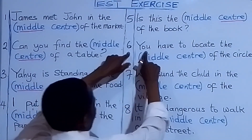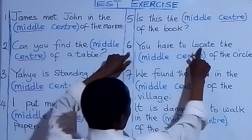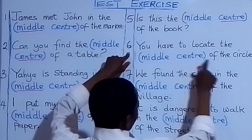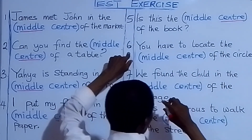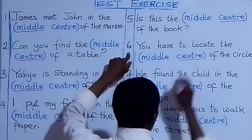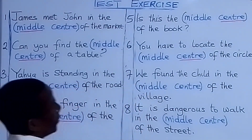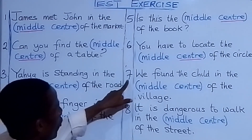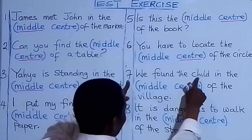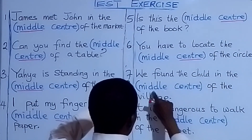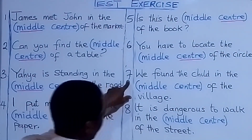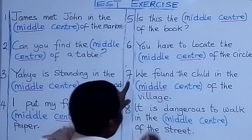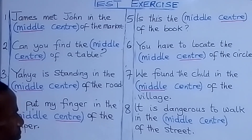Number six: You have to locate the center of the circle — we are going to put 'center' there, you have to locate the center of the circle. Number seven: We found the child in the middle of the village — we are going to put 'middle' there.